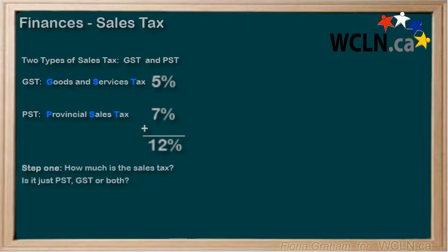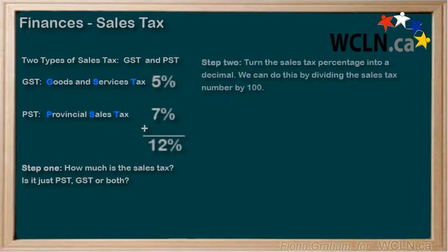Is it just PST, GST, or is it both, and how much are each of them? Turn the sales tax percentage into a decimal. We can do this by dividing the sales tax number by 100. A sales tax of 12% would be 12 divided by 100, which equals 0.12 in decimal form.